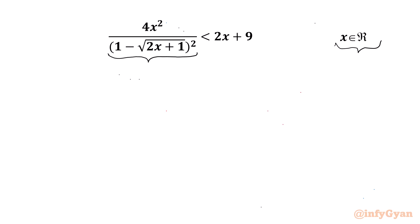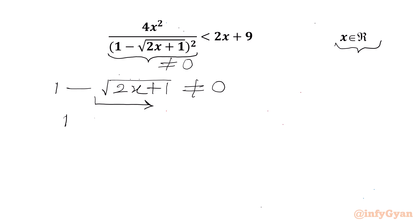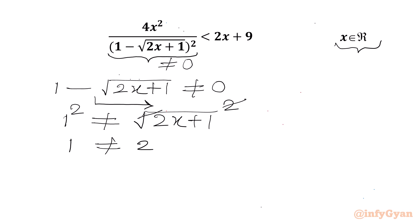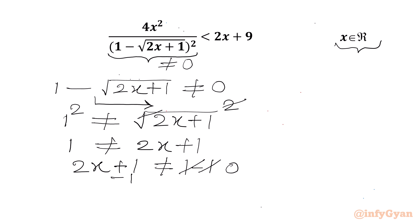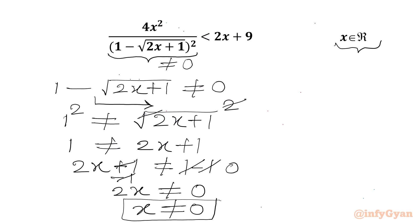Let's get started by writing that the denominator cannot be equal to 0. So 1 − √(2x+1) ≠ 0, which means 1 ≠ √(2x+1). Squaring both sides, 1 ≠ 2x+1, so 2x ≠ 0, meaning x cannot be equal to 0. That is our first condition: our solution cannot be 0.